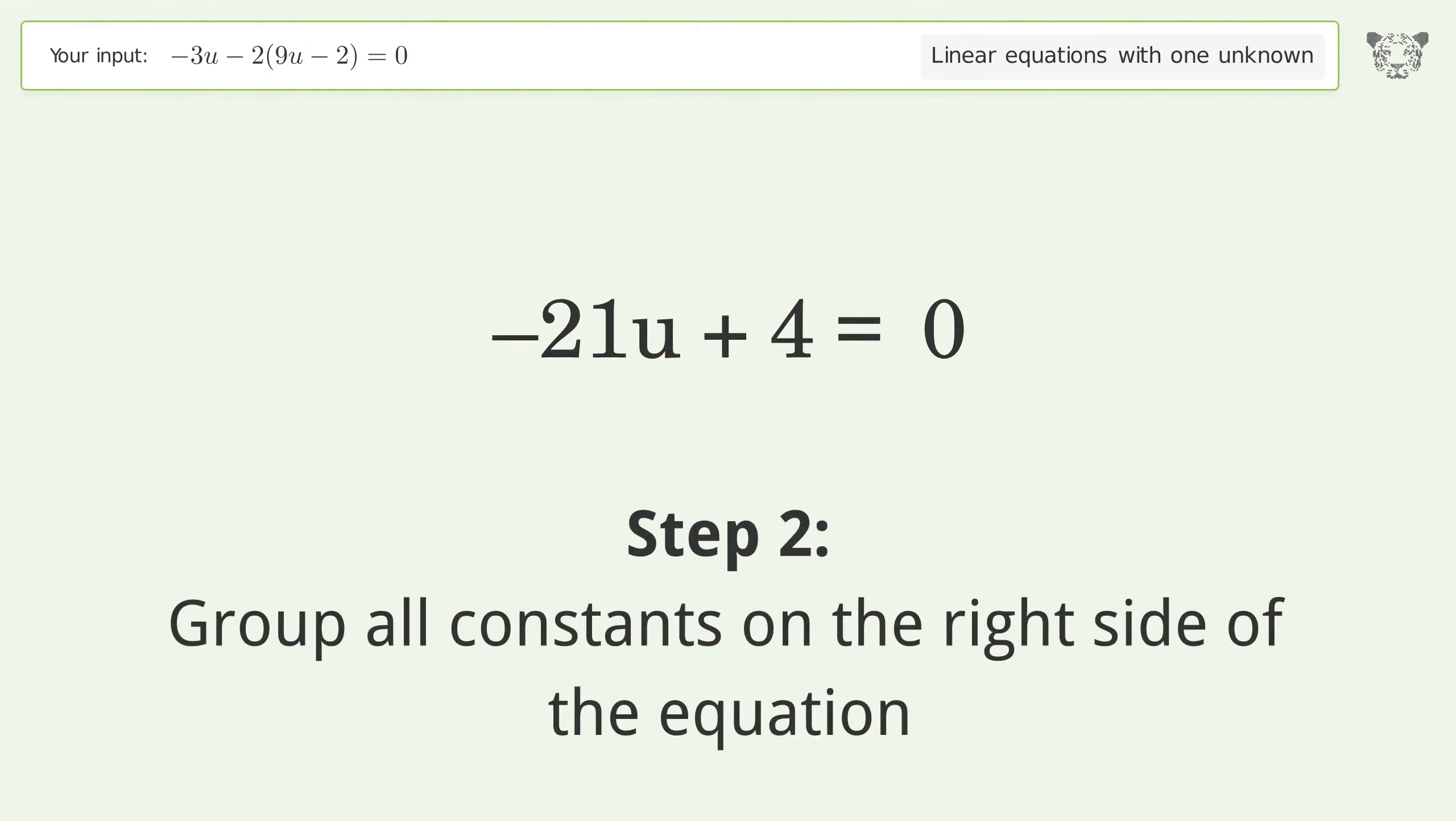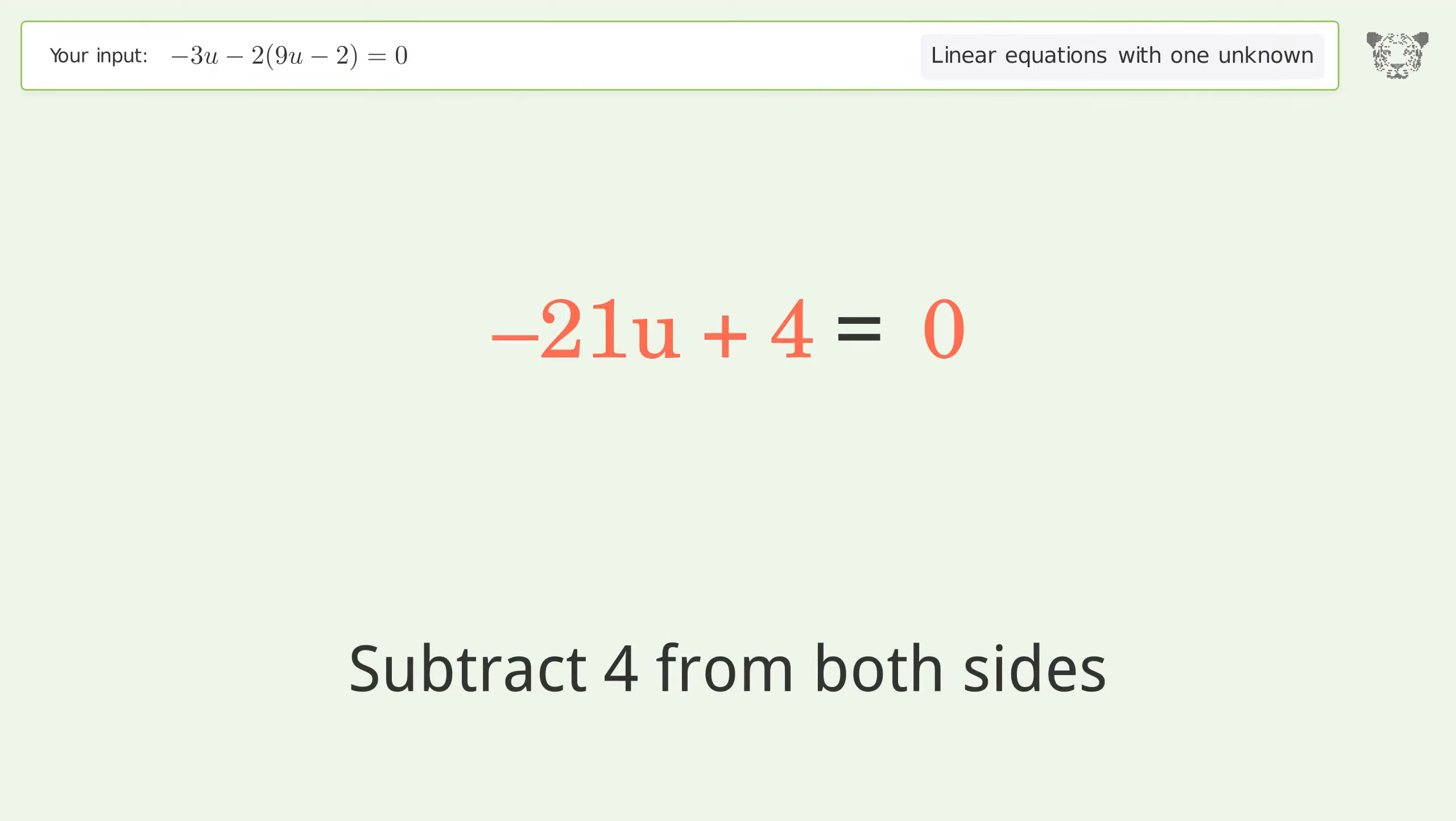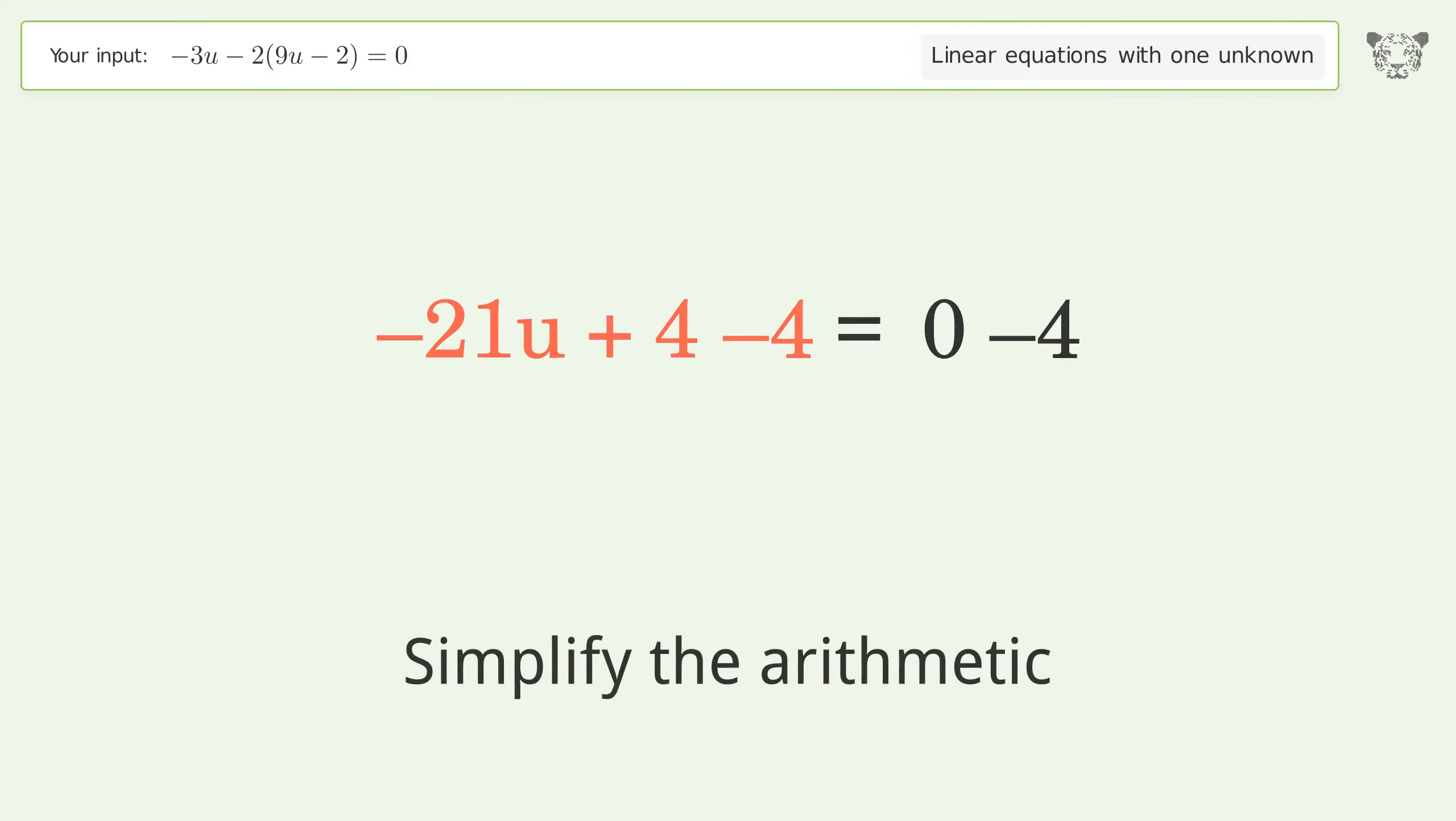Group all constants on the right side of the equation. Subtract 4 from both sides. Simplify the arithmetic.